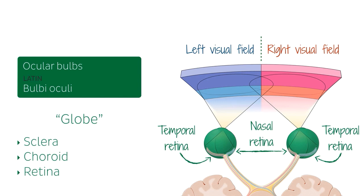Let's start with the left eye. Light from the left visual field will travel to the nasal retina, and light from the right visual field will travel to the temporal retina. Now looking at the right eye, we can see that light from the left visual field travels to the temporal retina, and light from the right visual field travels to the nasal retina. The retina then processes this information into action potentials which then travel down axons to the brain.